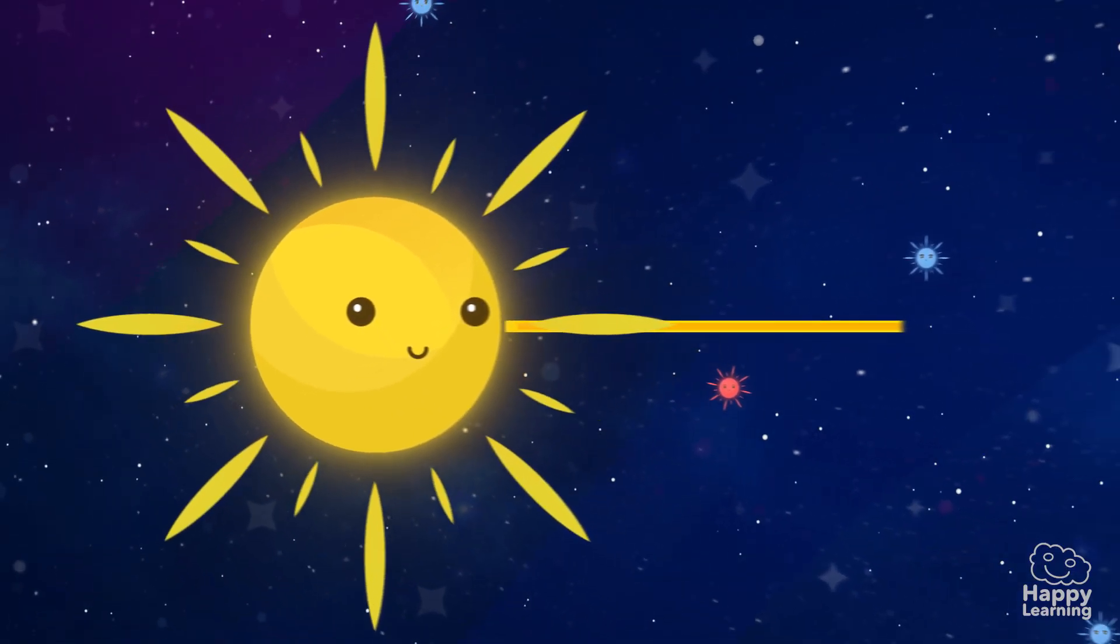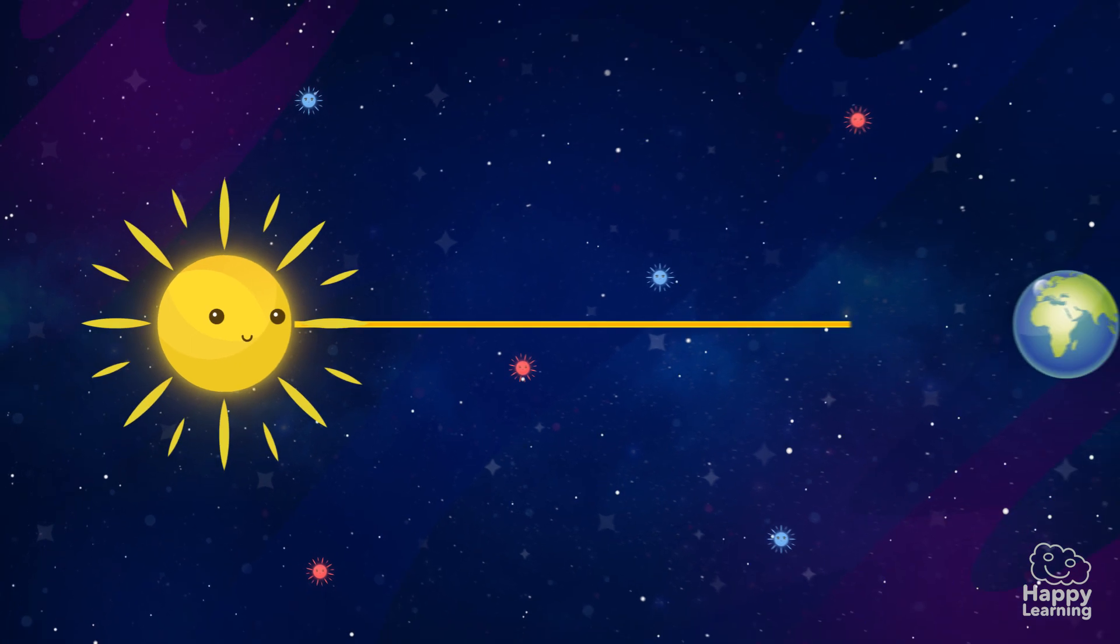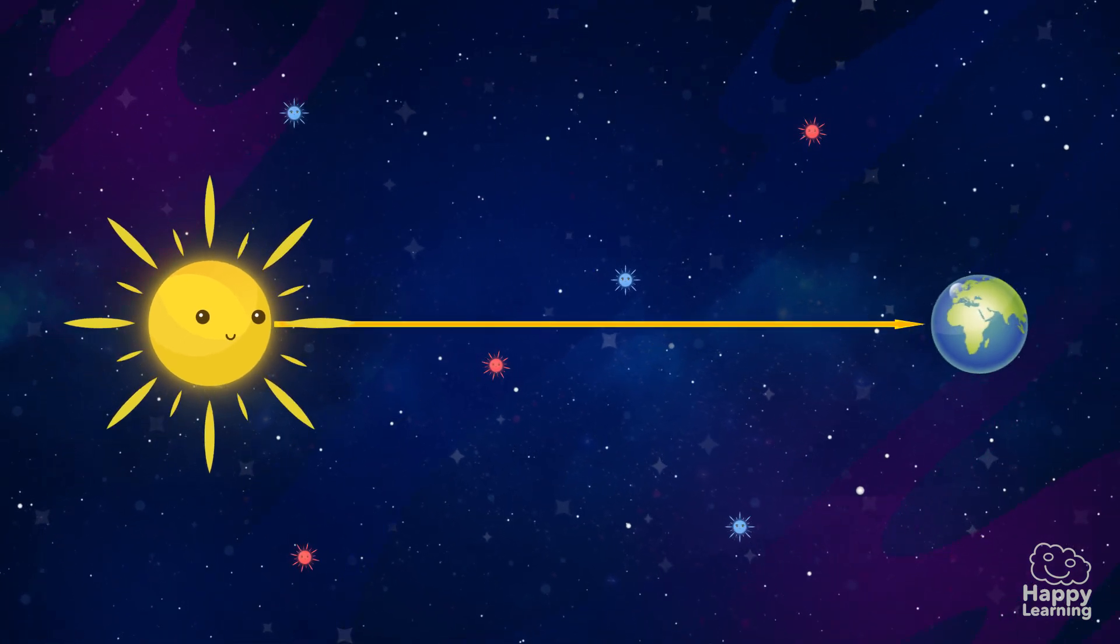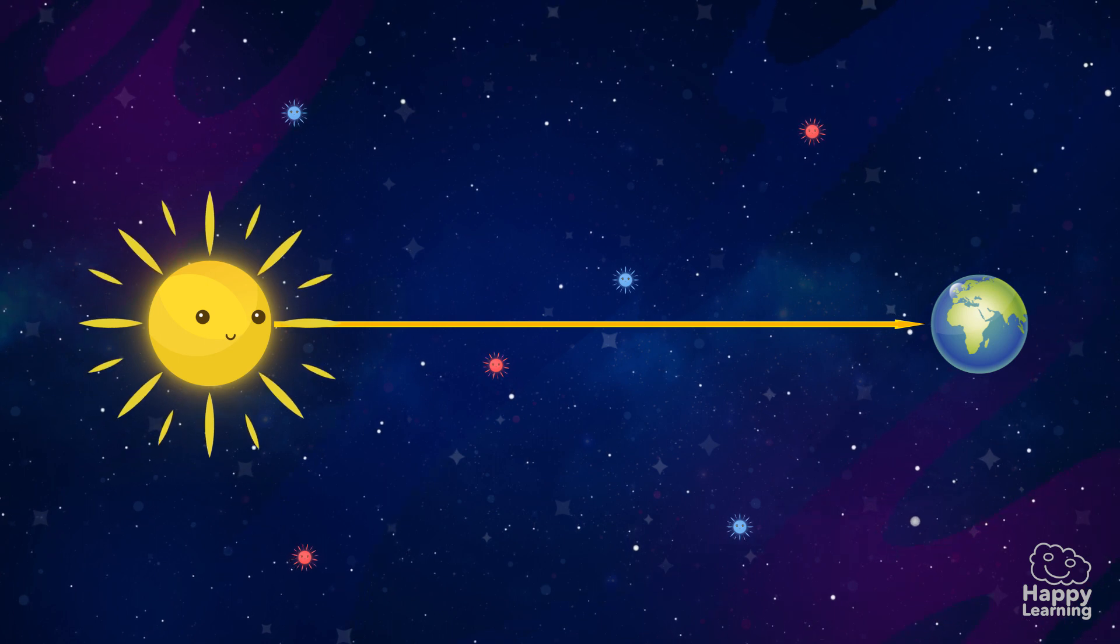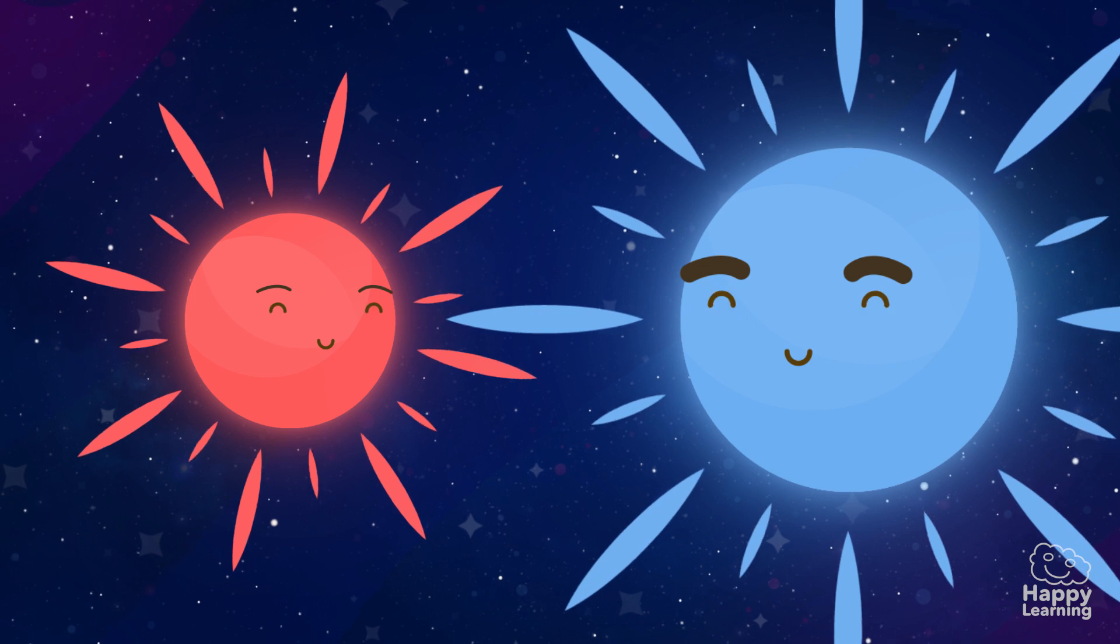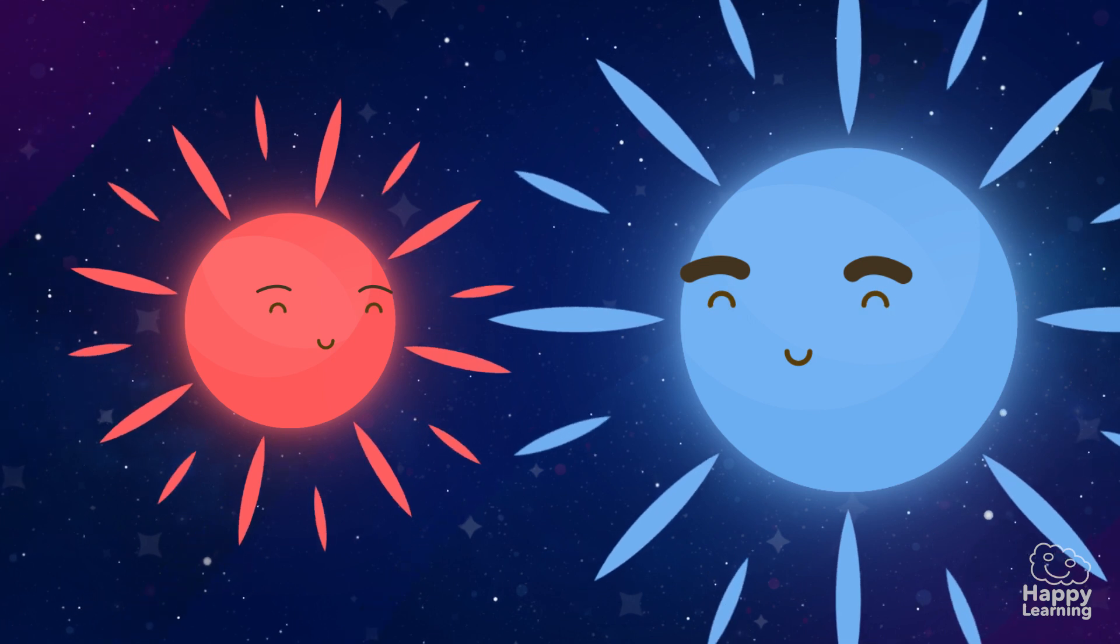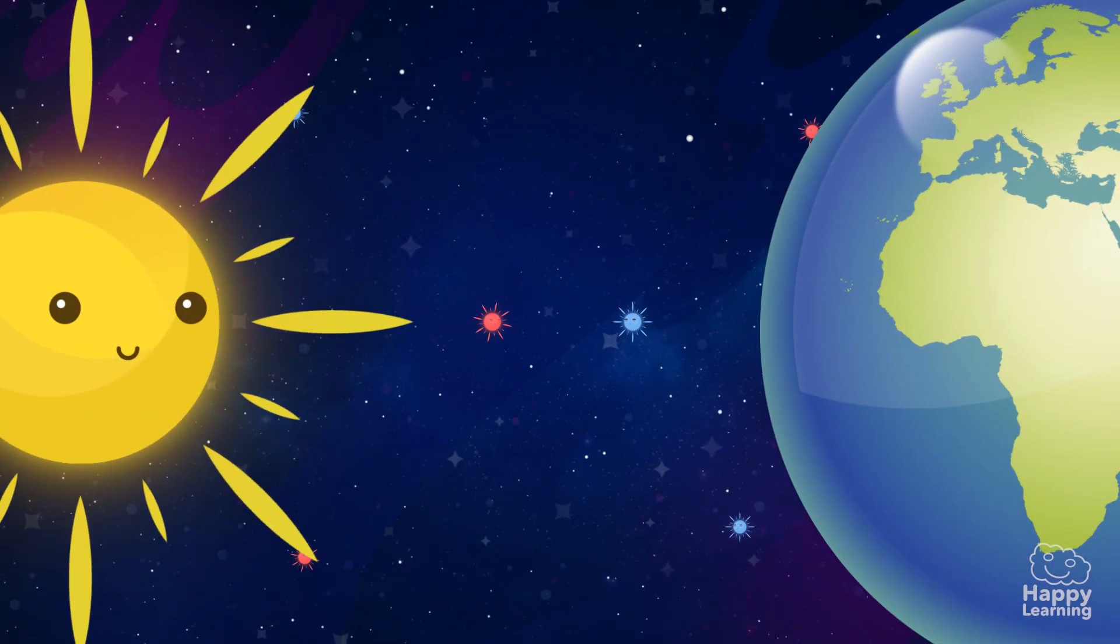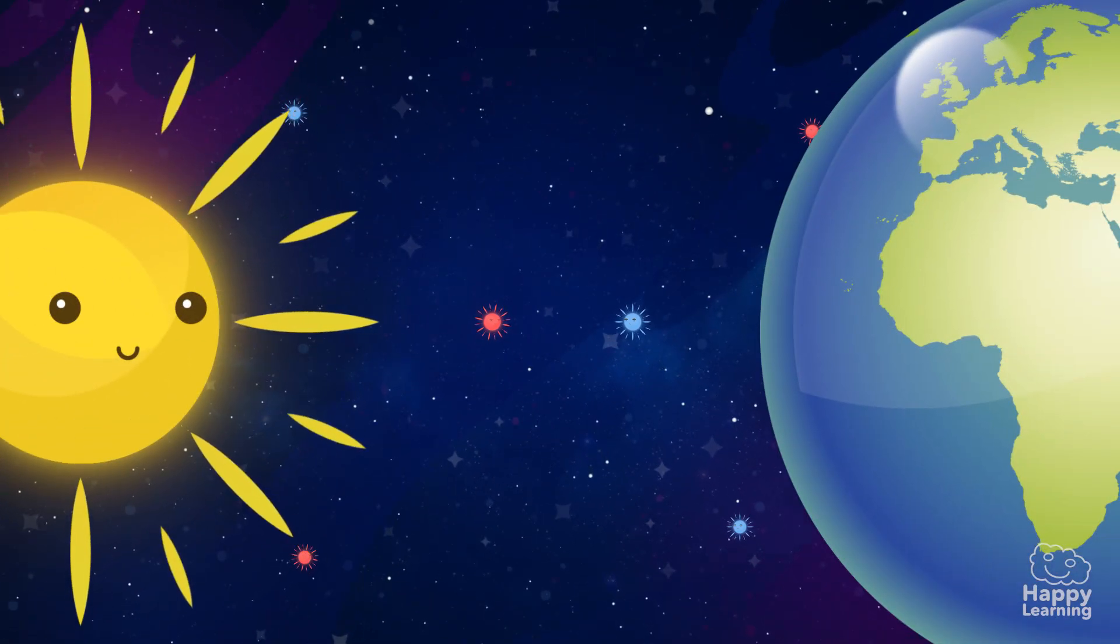The sun is the closest star to Earth. That's why it looks like the largest and brightest one. But that's not true—there are many stars a lot bigger than the sun, but they are so far away. That's why we see them so small.